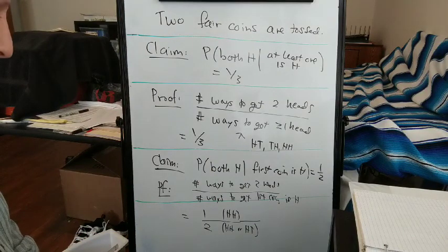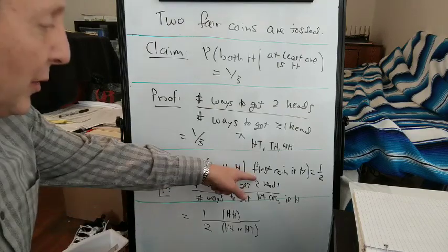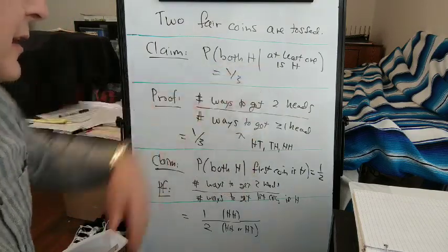So we get a different answer if we're given that the first coin is head than we get if we're given that at least one is head.